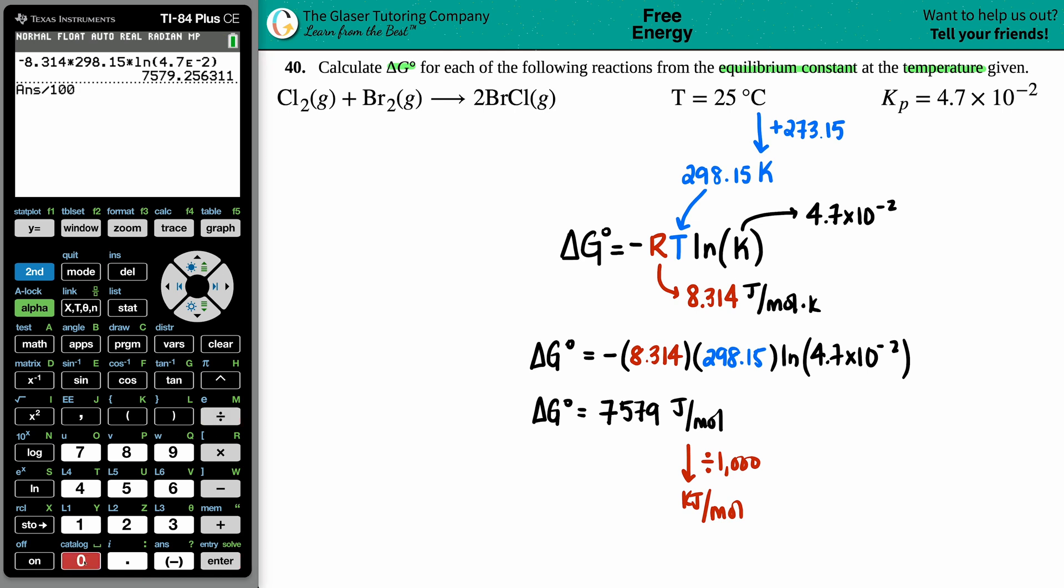So I'll just take this number, divide by a thousand, and then use the appropriate sig figs. This had a lot of sig figs in it, but this one only had two, so my answer can only have two sig figs. So my ΔG for this reaction is 7.6, because the seven rounds that five up to a six. And now we are good to go. Let's box this off and call it a day.